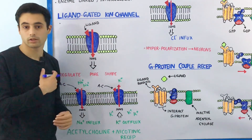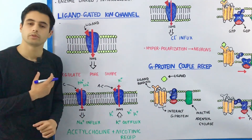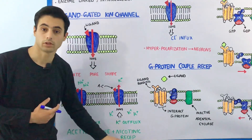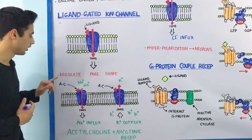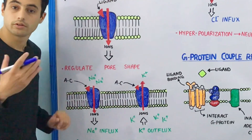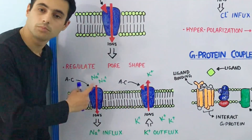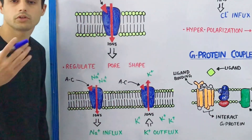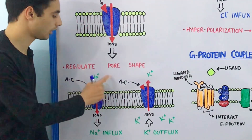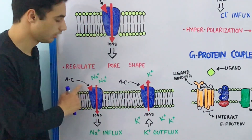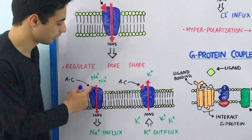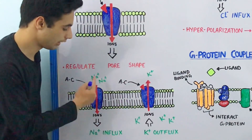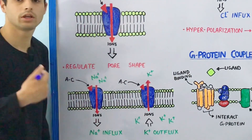Let's discuss it with the help of an example. Acetylcholine is a neurotransmitter that will bind with the nicotinic receptors. Have a look at this diagram. When acetylcholine binds with this nicotinic receptor, sodium is in abundance outside of the cell. So when acetylcholine — which is a ligand — binds with the nicotinic receptor, it will regulate the pore shape, open the ion channel, and sodium will move inside. This is the sodium influx.